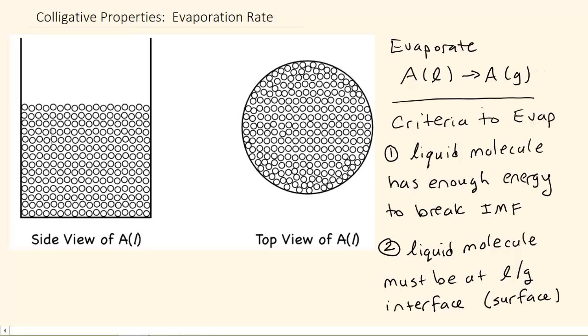And there's a couple criteria. So if we take a look at a container right here of liquid A, if we look on the side, we can see there's a surface up here. There's a surface that's an interface between the liquid and the gas phases. And we can also look straight down on top. And every molecule we see here would be then the actual surface molecules. So all of these molecules are pictured here by looking straight down on it. So the criteria to evaporate are pretty straightforward.